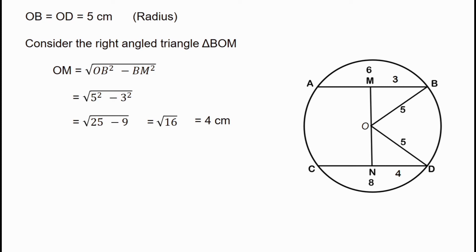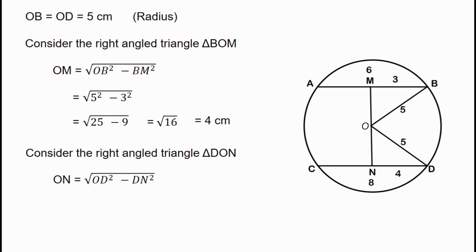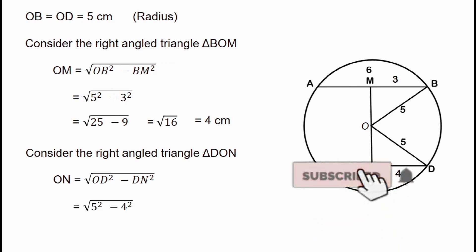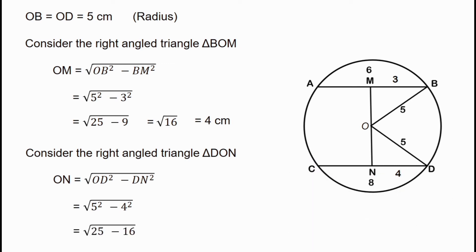Now we find the other side. DN is half of the 8 cm chord, so DN equals 4 cm. Then ON equals root of OB squared minus DN squared. Substituting: root of 5 squared minus 4 squared, that is root of 25 minus 16, which equals root 9. Root 9 is 3. So ON equals 3 cm.